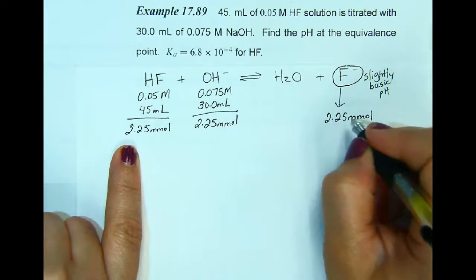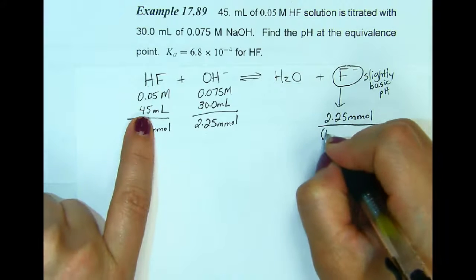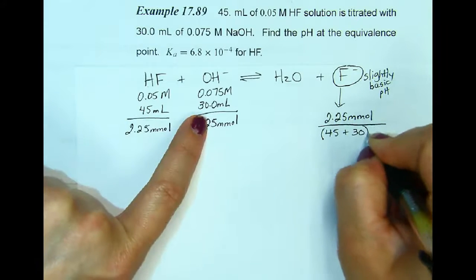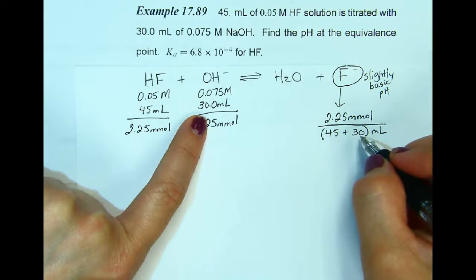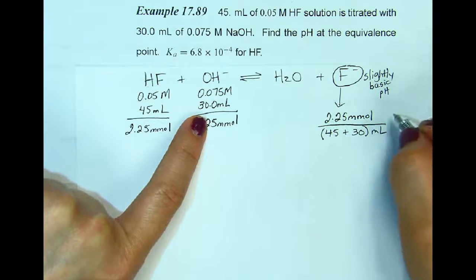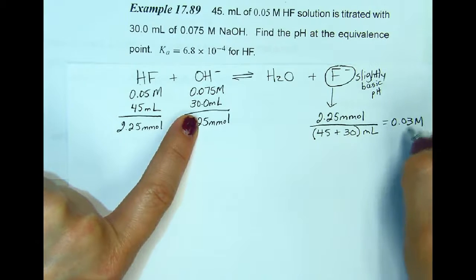Now I need to know the molarity of the fluoride ion, so I'm going to divide it by the total volume of 45 milliliters plus 30 milliliters. And when I take these numbers and do this math, I get 0.03 molar fluoride.